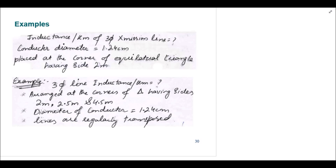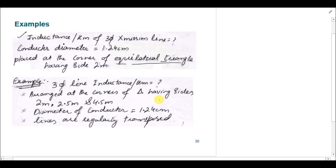This is the second part of the tutorial in which we are going to solve questions related to the inductance of the three-phase transmission line. We have two examples: the first one has conductors placed on the vertices of an equilateral triangle, and the second has different distances between the three phases — an unsymmetrical distribution. The first is a symmetrical distribution of phases.